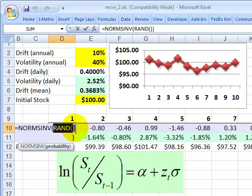RAND gives me the probability between zero and one and NORMSINV then translates that into the inverse standard normal cumulative distribution.